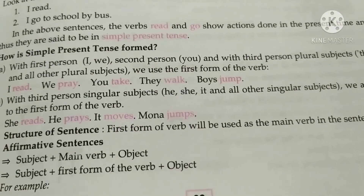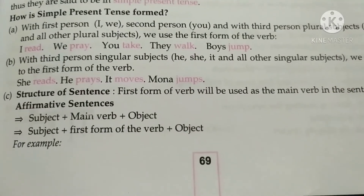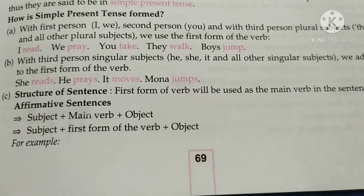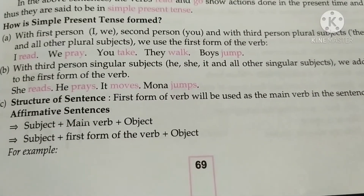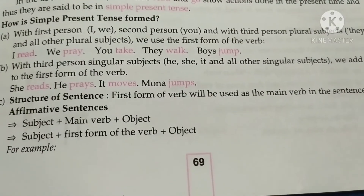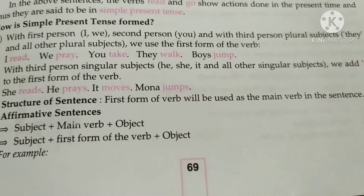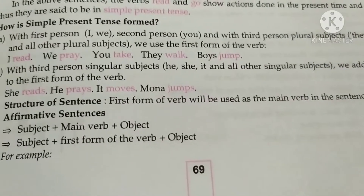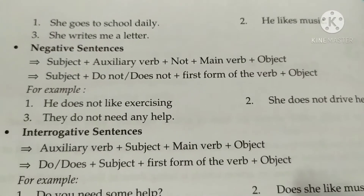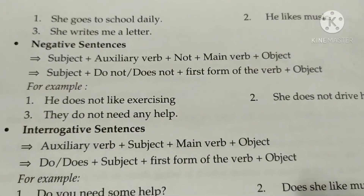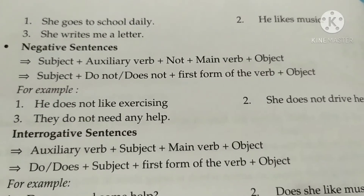More examples: he prays, it moves, Mona jumps. The structure of an affirmative sentence in simple present tense is: Subject + first form of verb + object. For example: 'She goes to school daily,' 'He likes music,' and 'She writes me a letter.'